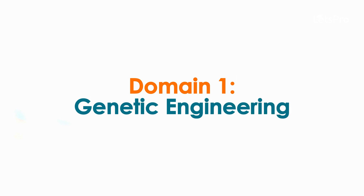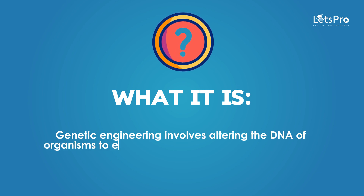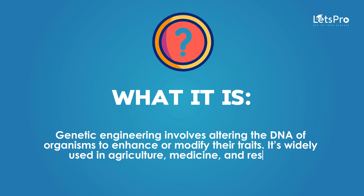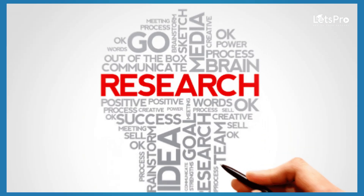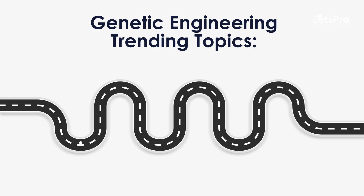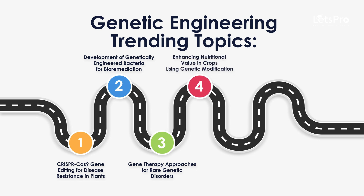Domain 1: Genetic Engineering. Genetic engineering involves altering the DNA of organisms to enhance or modify their traits. It's widely used in agriculture, medicine, and research. Trending topics include CRISPR-Cas9 gene editing for disease resistance in plants, development of genetically engineered bacteria for bioremediation, gene therapy approaches for rare genetic disorders, enhancing nutritional value in crops using genetic modification, and development of synthetic biology tools for metabolic pathway engineering.